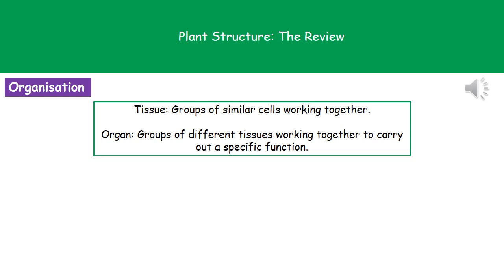Welcome to our review on plant structure. First, we need to understand a couple of terms that we hopefully remember from about year 7. When we're talking about a tissue, we're talking about a group of similar cells working together. And when we're talking about an organ, that's a group of different tissues that work together to carry out a specific function.